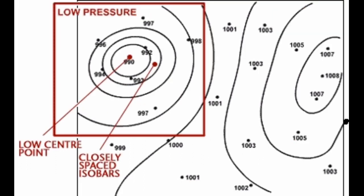A depression, also known as a low, can be recognized on a weather chart by an area of closely spaced isobars arranged in a roughly circular shape where pressure is lower than surrounding areas. They are often accompanied by fronts. In the northern hemisphere, wind blows around the depression in an anti-clockwise direction. The lowest pressure occurs at the middle of a depression, known as the low pressure center. Depressions are often associated with strong winds and heavy rain and are nearly always accompanied by fronts.